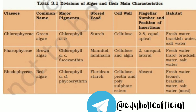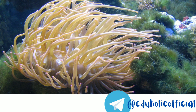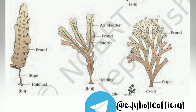The plant body of bryophytes is more differentiated than that of algae. It is thallus-like and prostrate or erect, and attached to the substratum by unicellular or multicellular rhizoids. They lack true roots, stem, or leaves, but may possess root-like, leaf-like, or stem-like structures. The main plant body of the bryophyte is haploid and produces gametes, hence is called a gametophyte.